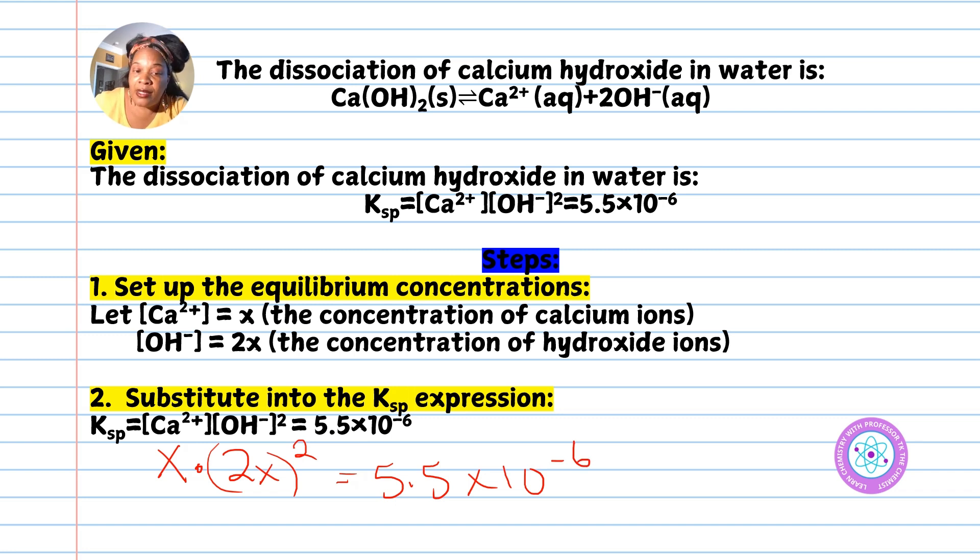Now, x times (2x)² equals x times 4x², since 2² equals 4. Multiplying 4x² times x gives 4x³, which equals 5.5×10⁻⁶.